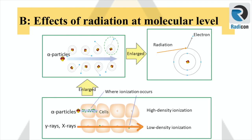Radiation provides energy to substances along its pathway. The electrons along the pathway are ejected with the given energy — this is ionization. We know that ionization can be directly or indirectly ionizing. Directly ionizing radiation, such as alpha particles, transfers energy more intensely in an extremely small area, directly damaging cells.